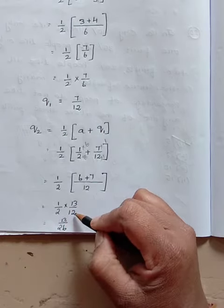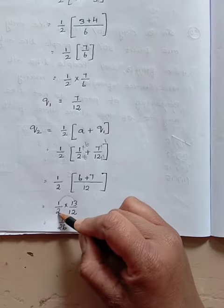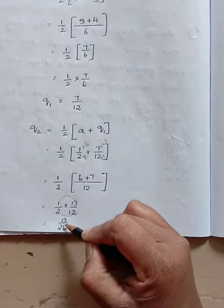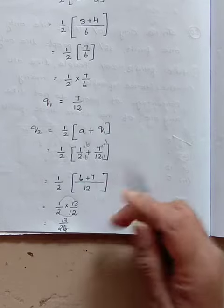Here the cancellation is not possible. So we will multiply directly. 1 times 13 is 13, 2 times 12 is 24. So your second rational number is 13/24.